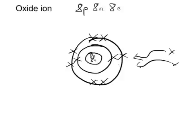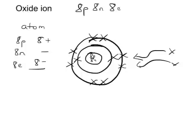So it gains 2 extra electrons and now has a full shell. Originally, as an atom, it had 8 protons — that's 8 pluses — 8 neutrons with no charge, and 8 electrons — that's 8 minuses — so overall had 0 charge.